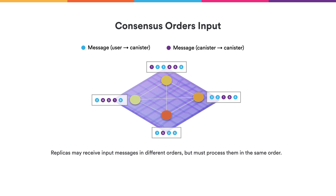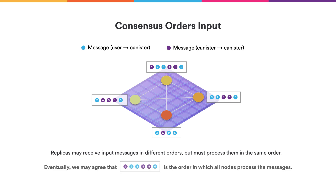The subnet must process different messages — namely messages from users to canisters and from canisters to canisters — and they must all process the same messages in the same order such that they achieve the same state. But each of the replicas powering the subnet might actually see the messages in a different order. We use a consensus algorithm for all the nodes to agree on an ordering of the messages to process.